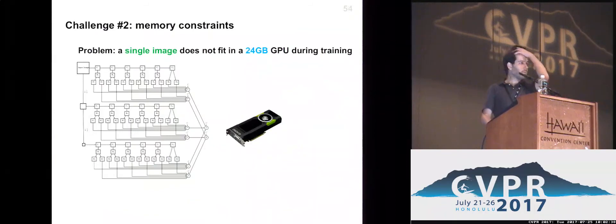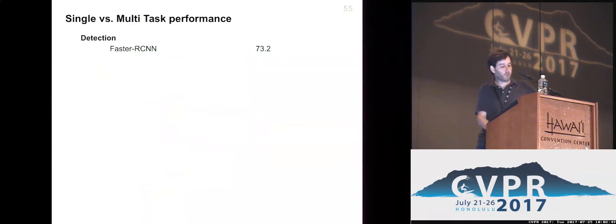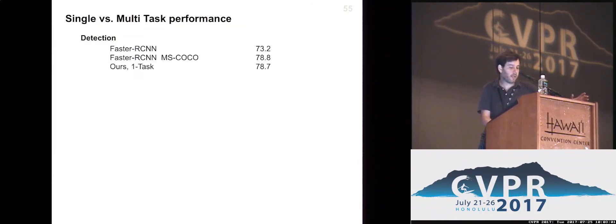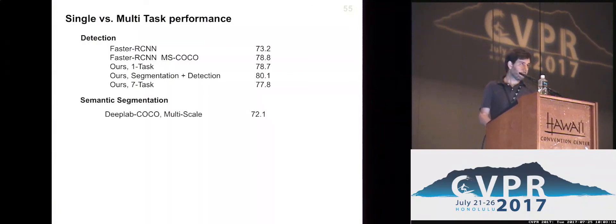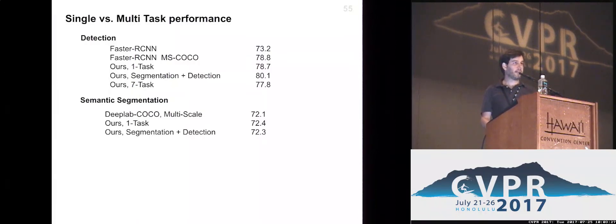Coming to how this works in terms of accuracy, we got mixed results. For detection we compare to a very strong baseline — Faster R-CNN trained on MS-COCO — and for individual tasks we get competitive performance. When training for two related tasks, detection and semantic segmentation, we get a certain boost. But when training across all seven tasks, we get a drop in performance bringing us slightly below single-task performance. The same story holds for semantic segmentation, where we compare to DeepLab trained multi-scale on COCO. Single-task and two-task performance are comparable, but moving to seven tasks yields a certain drop in accuracy.